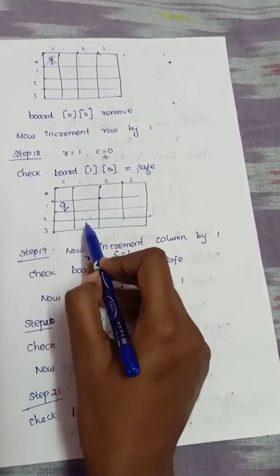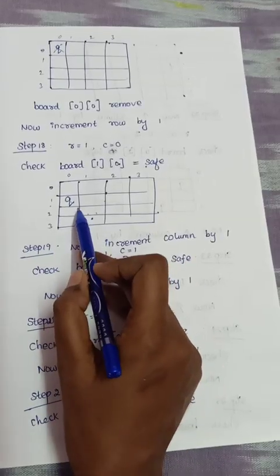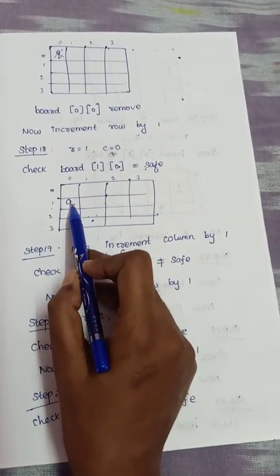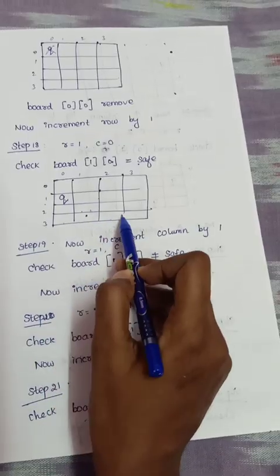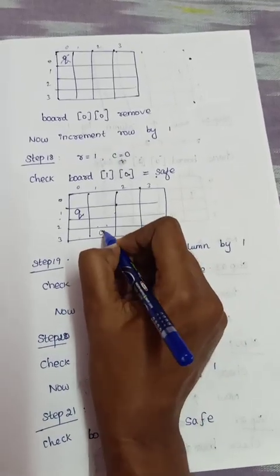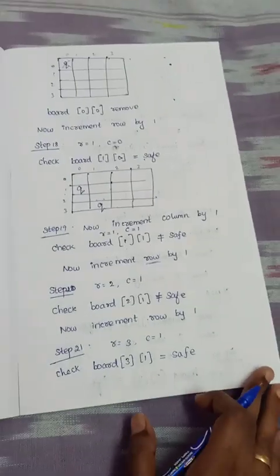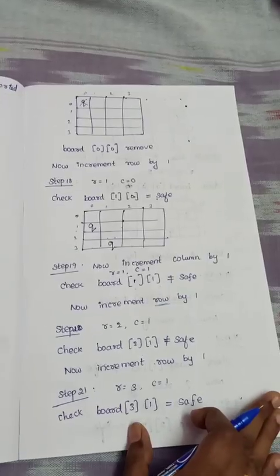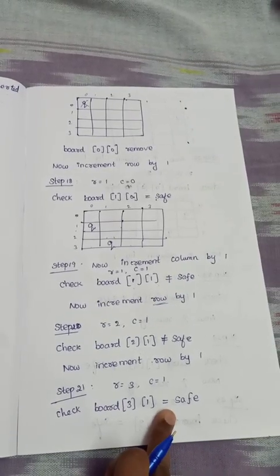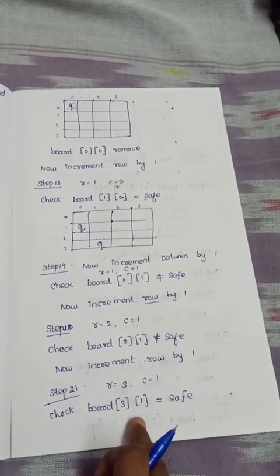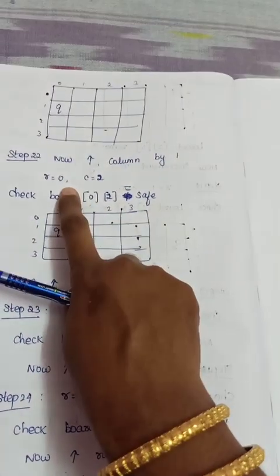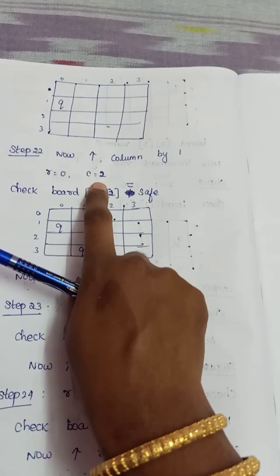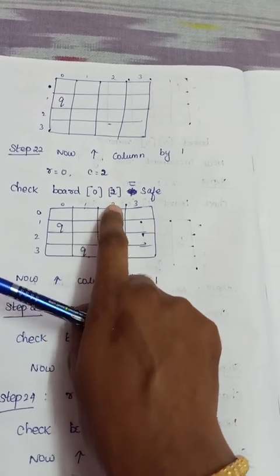Board[3][1] — we check row, column, and diagonal. It is safe, so we place the queen. We reset the row to 0 and increment the column. Board[0][2] is safe, so we place the queen there.